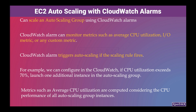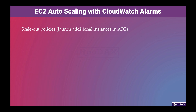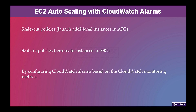We can set up scale-out and scale-in policies by configuring CloudWatch alarms based on CloudWatch monitoring metrics. Scale-out policies are about launching additional instances in an autoscaling group, and scale-in policies are about terminating instances in an autoscaling group, configured via CloudWatch alarms.